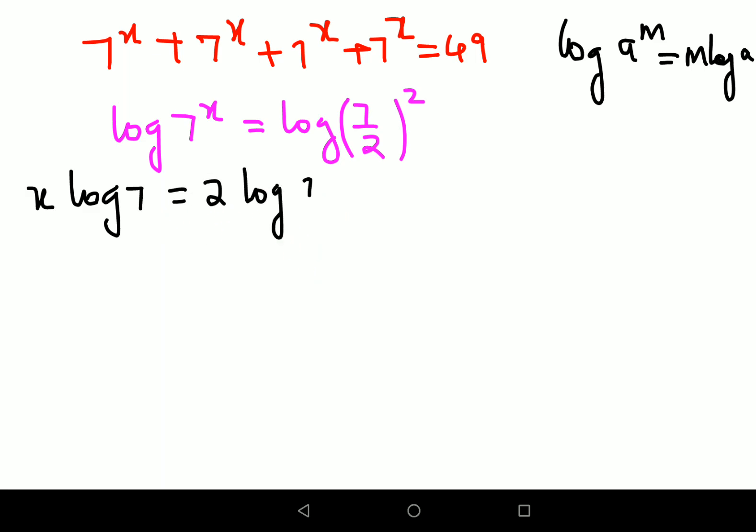Another property to remember is log(a/b) = log(a) - log(b). So this becomes x·log(7) = 2(log(7) - log(2)).